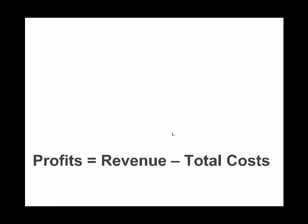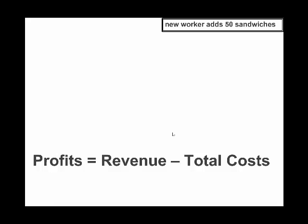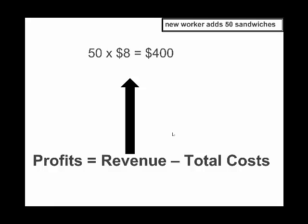Let's make a hypothetical example. Suppose you can hire one new worker, and that extra worker is going to make you 50 more sandwiches — it allows you to produce 50 additional sandwiches. Your revenue increases quite a bit: 50 sandwiches at a price of $8 gives you $400 of extra revenue. So on a per-sandwich basis, the 50th sandwich makes you $8 in revenue — notice that the revenue of that 50th sandwich is the same as the price.